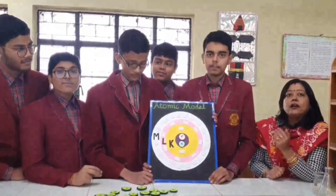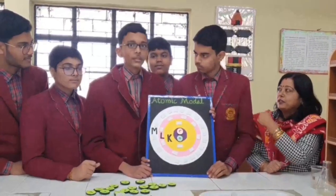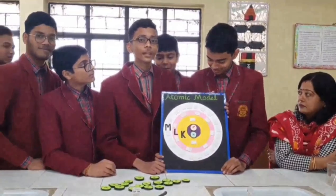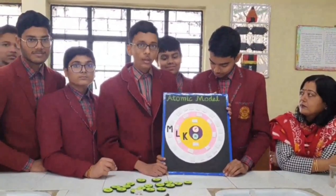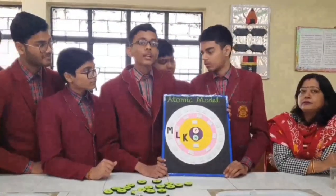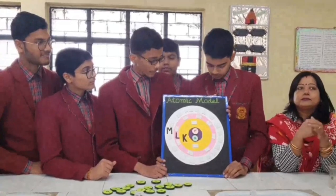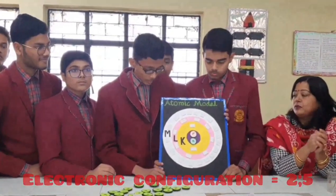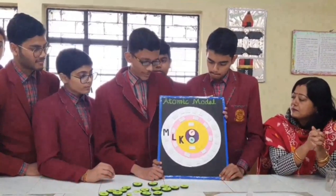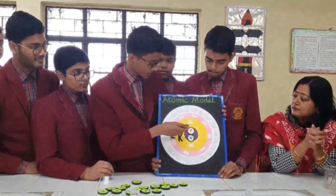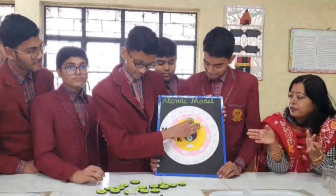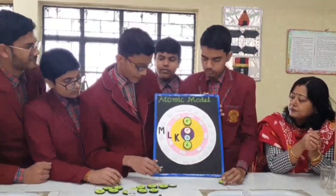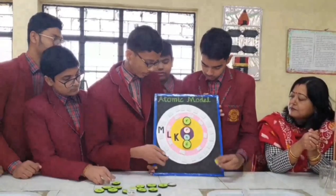Now Badan will show you the atomic model of nitrogen. Since the atomic number of nitrogen is 7, we will put — see the electronic configuration here also. The electronic configuration of nitrogen is 2.5. So we will put in the first K-shell 2 electrons, and in the second L-shell we will put 5 electrons.